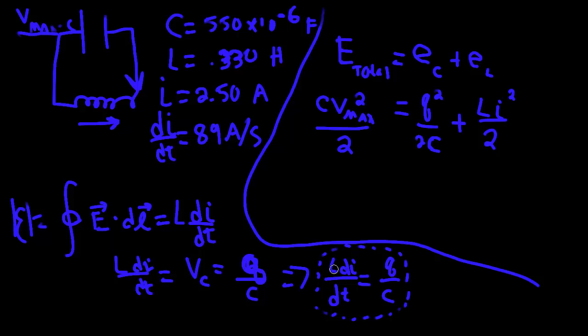And so, I'll go ahead and give you the numbers and show that if you plug the numbers here, L, 0.330 times the 89 equal to Q, which we don't know, divided by the capacitance, which was also given, you'll see that little Q, instantaneous Q, is equal to 0.0173 coulombs.